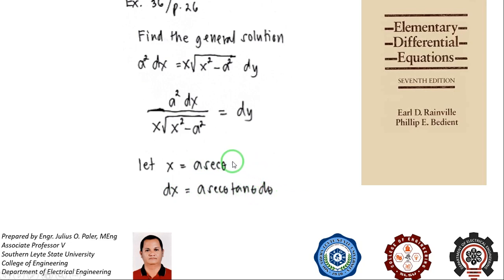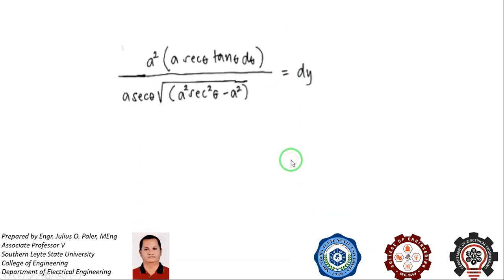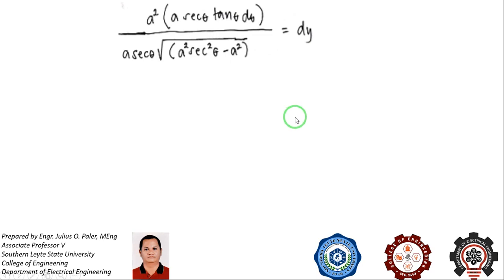We choose this substitution because we want to arrive at the identity secant squared of theta minus one. Substituting x and dx into the left side of the equation: dx is a secant theta tangent theta d theta, and x is a secant theta. Since we have x squared, we now have a squared secant squared of theta minus a squared.